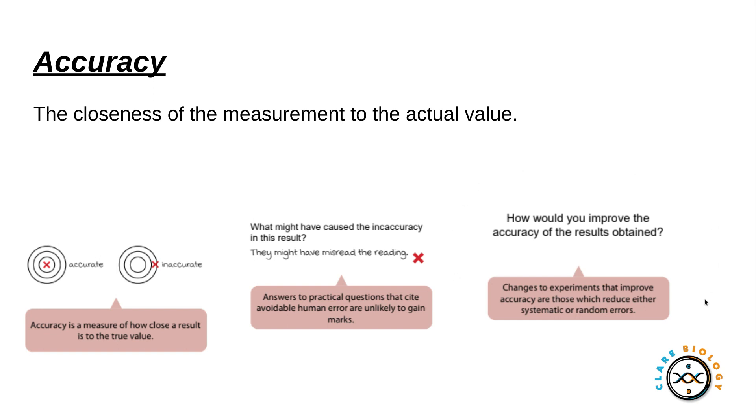In terms of improving the accuracy of results obtained, this is normally due to changing the experiment to improve the accuracy. So how can you be closer to that true value?